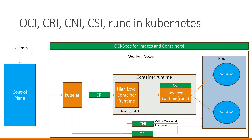So here we discussed about OCI, CRI, CNI, CSI and RunC in Kubernetes. We discussed the basic communication between various components, but the actual communication will be more complex among various components. We will discuss those workflows when we go through each of these components in detail in the coming videos. I hope this video helps. Thanks a lot for watching.